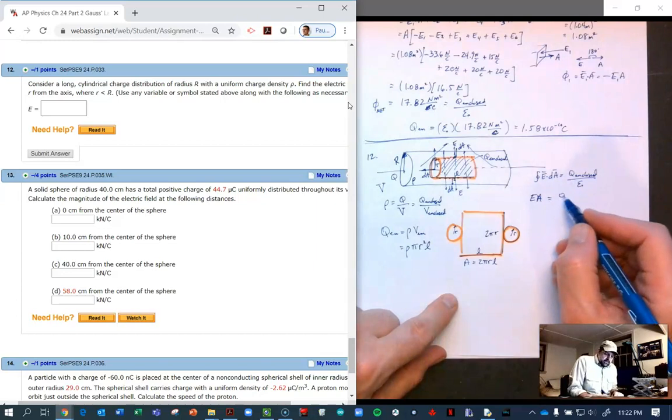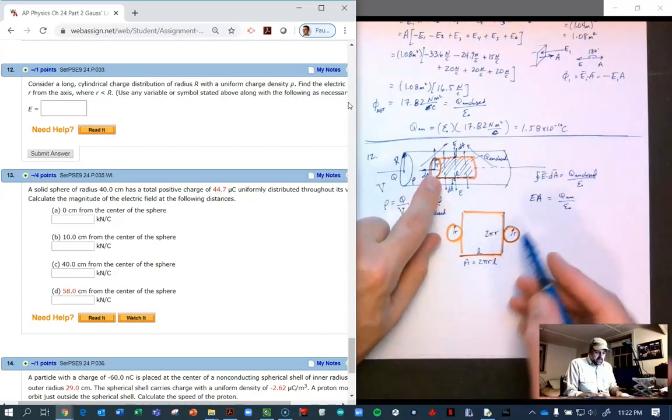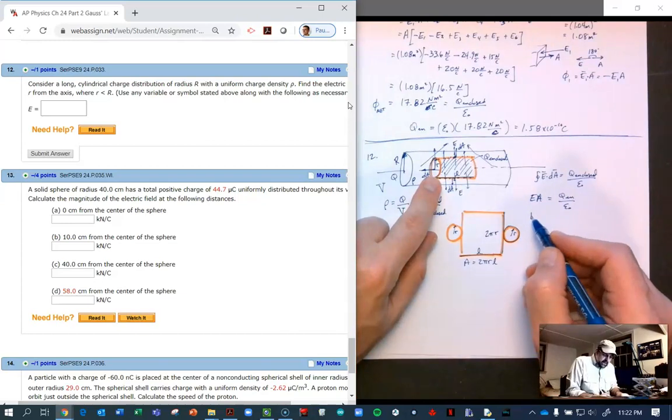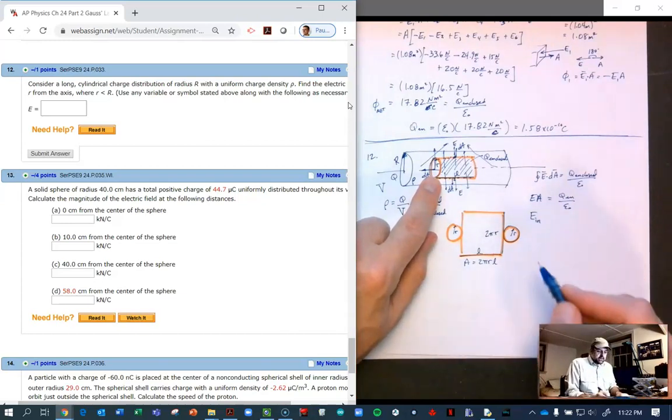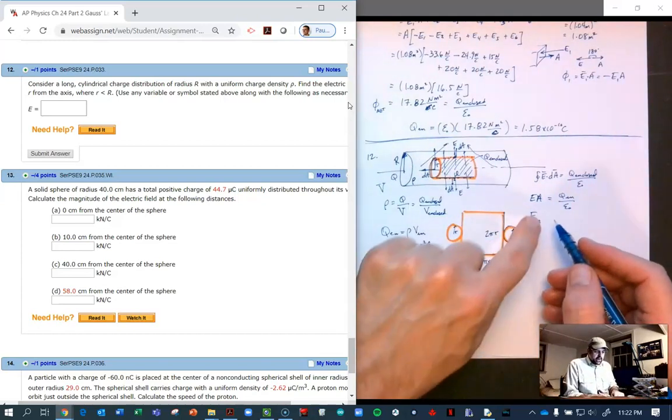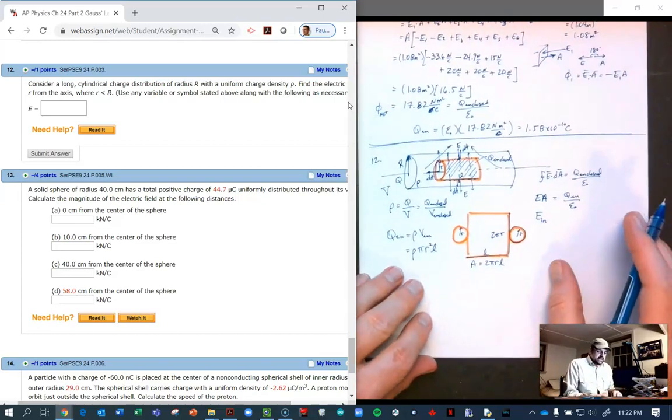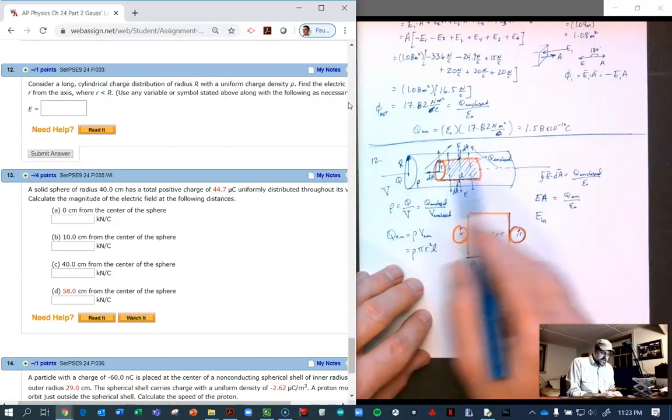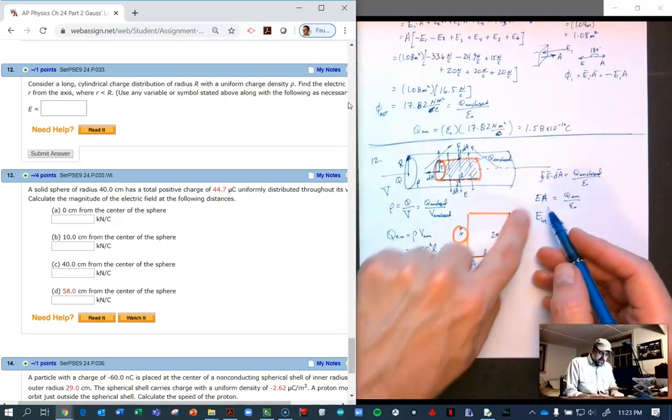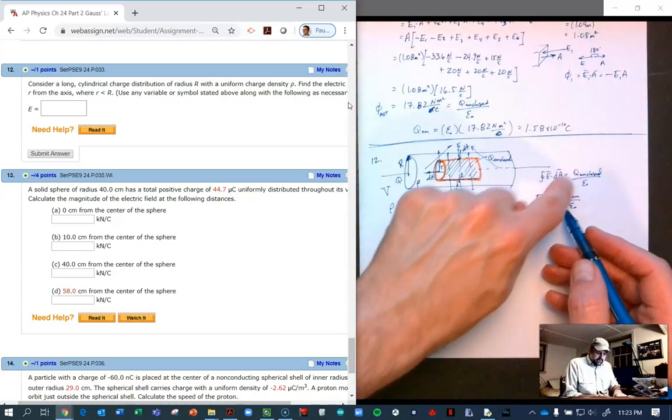We're looking for the electric field inside, so E_in inside times the area equals Q enclosed. The area is the area of my Gaussian surface, and Q enclosed is the charge enclosed by my Gaussian.